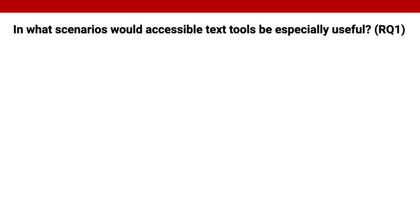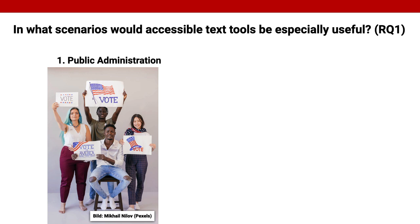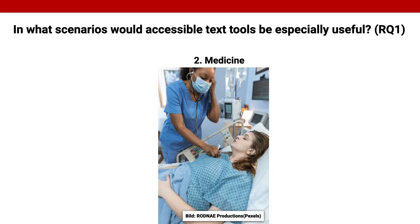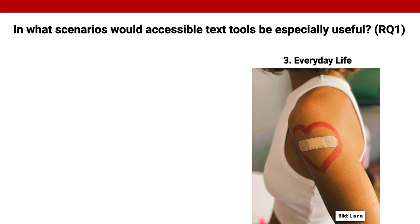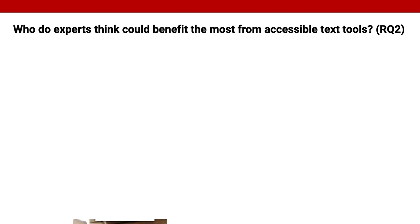The first question is: in what scenarios would accessible text tools be especially useful? We found that the most frequently mentioned scenario is public administration. Specific tasks in this scenario include finding information about an election and understanding the election programs of political parties. Other examples include official forums and websites and tax notices. The second scenario frequently mentioned by experts focuses on the medical field, including receiving a letter from a doctor, doctor-patient communication, package inserts for medicines, and health insurance information. Experts also frequently commented on everyday scenarios, such as understanding COVID-19 rules, understanding mail from an electricity provider, searching for knowledge online, and online shopping.